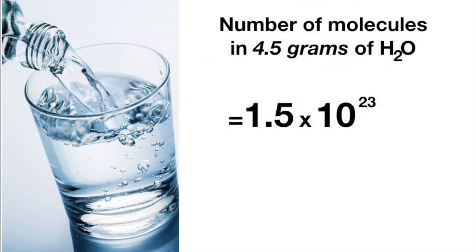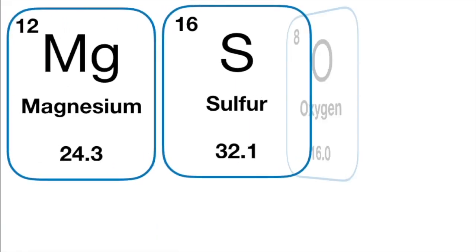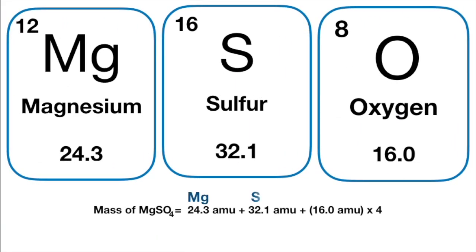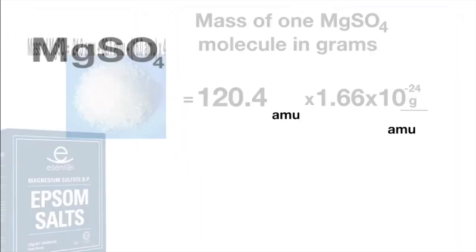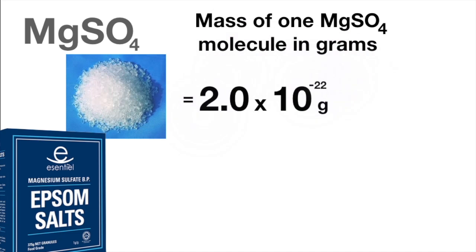Now we follow the same procedure to find the number of salt molecules in our sample. First, we figure out the atomic mass of one molecule of magnesium sulfate by consulting the periodic table. So the total atomic mass of magnesium sulfate is 120.4 amu. The gram mass is therefore this.